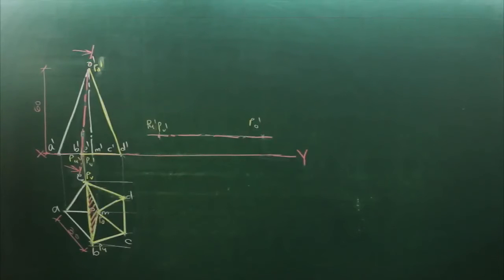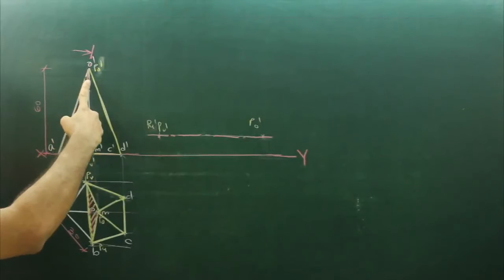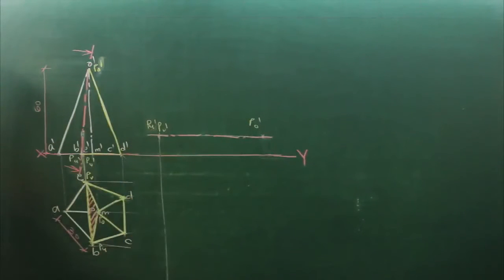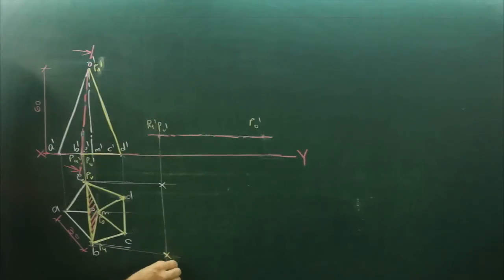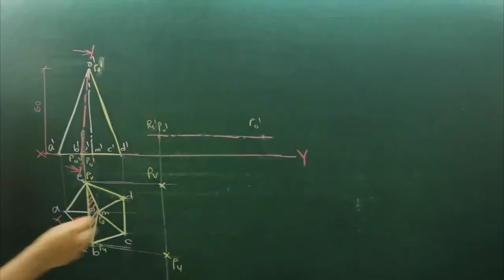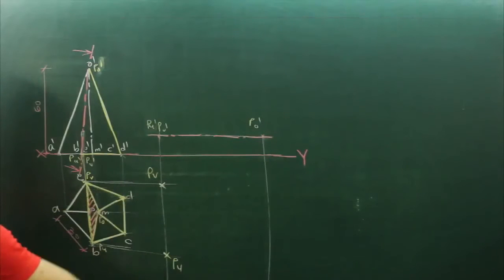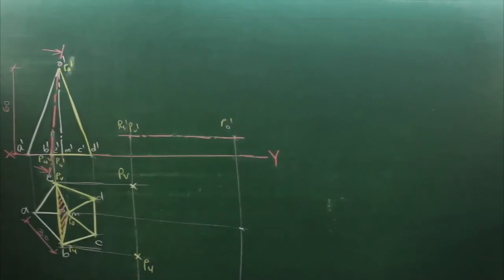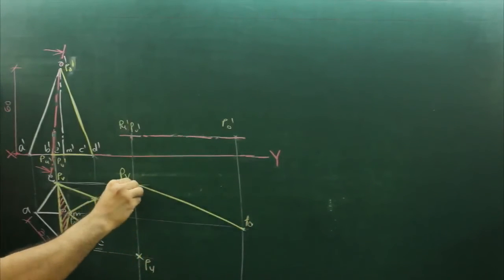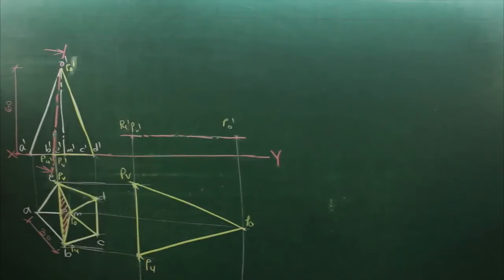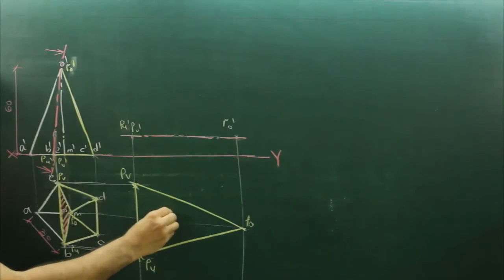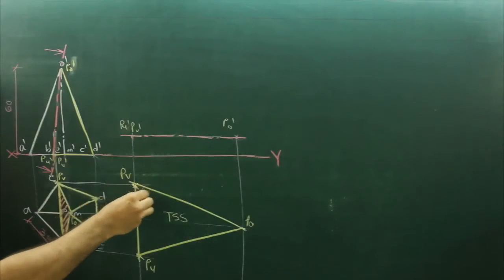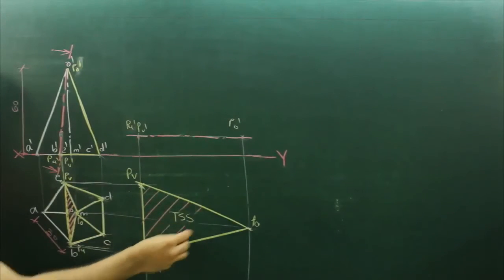Now we will draw the TSS, where we will get an isosceles triangle with maximum base and maximum altitude. First we will draw the cutting plane line parallel to the XY line, then project PU-dash and PV-dash from here, and PV and PU from here. Then project PO-dash, and PO. Wherever it intersects, that is PO. Join these points to get the isosceles triangle with maximum base and maximum altitude. This is the true sectional shape.